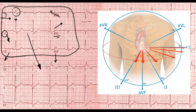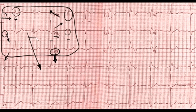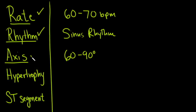Given that, the axis should be positive in lead III — and it is — and positive in AVF since it runs nearly parallel — and it is. It should be negative in AVL since it's going almost opposite — and it is. So the overall axis is somewhere between 60 and 90 degrees. That takes care of axis.